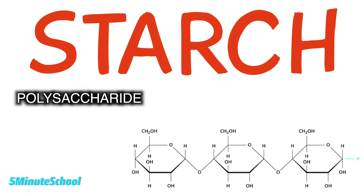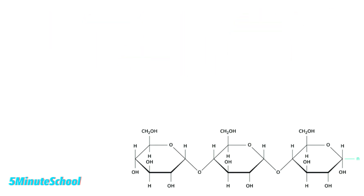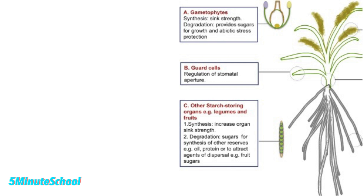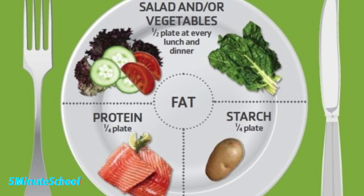Starch is a polysaccharide found in many parts of the plant in the form of small grains. Large amounts of starch are found in plant seeds and storage organs. Starch is an important food and is a major energy source in most diets.